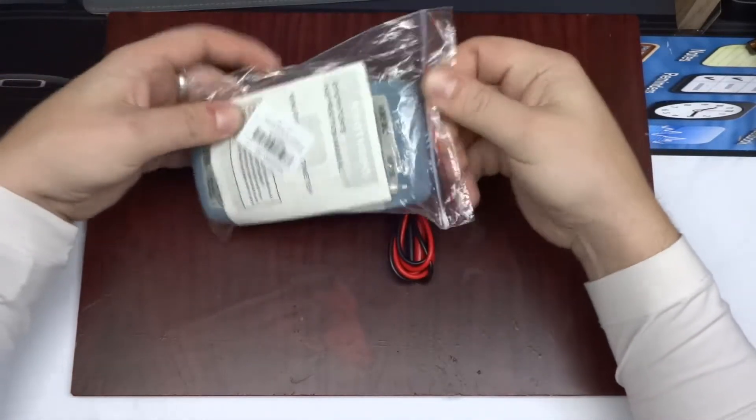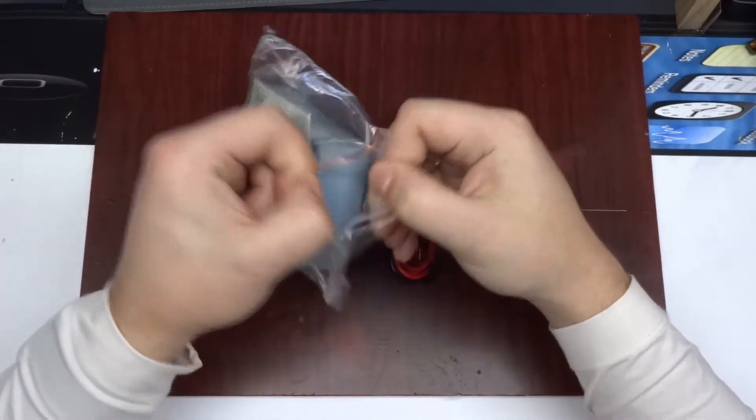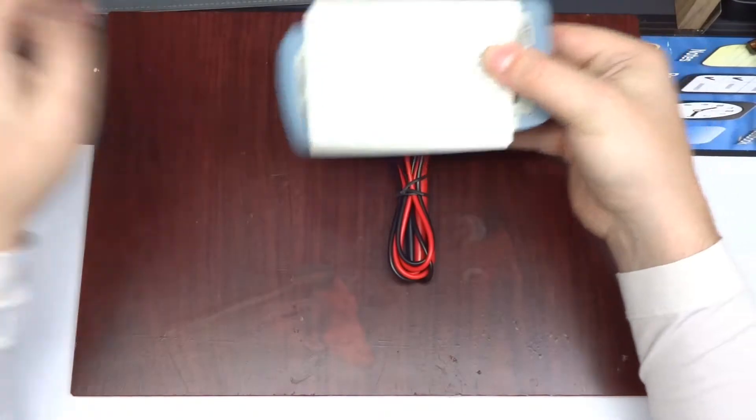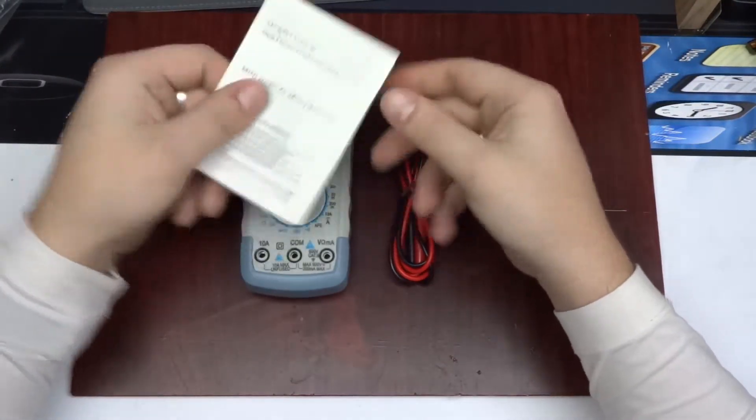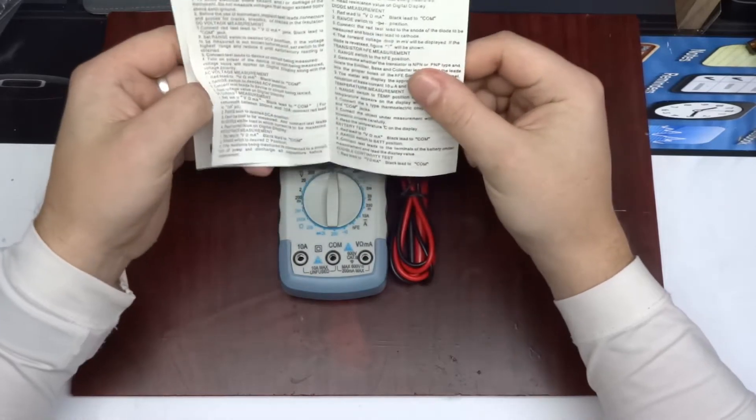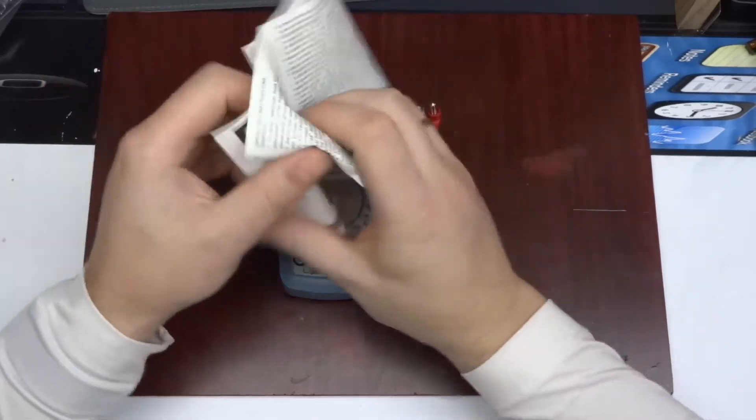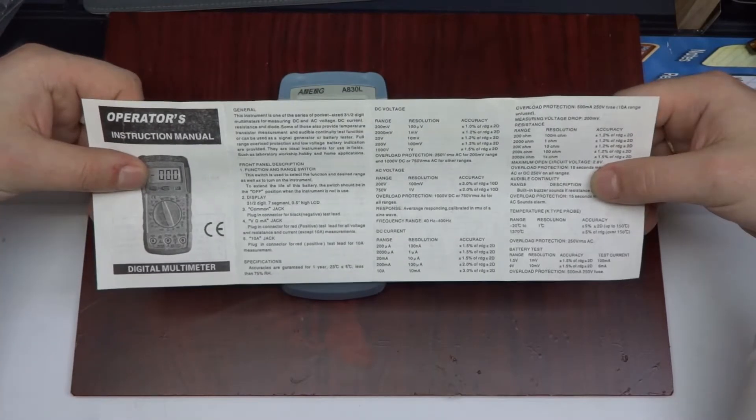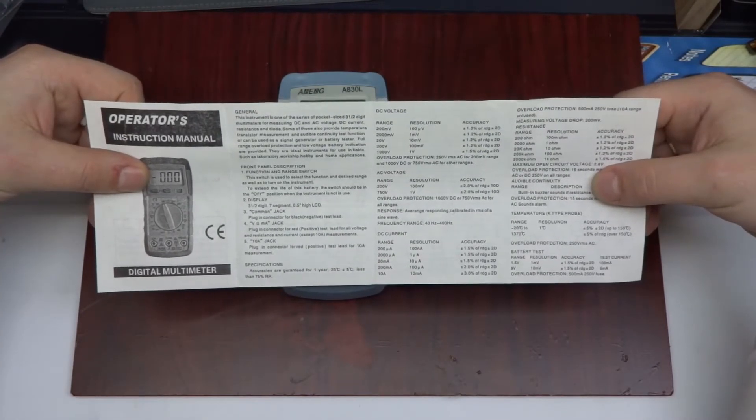We've got the device itself and an extensive manual. As you can see, the instrument is one of the series of pocket-sized three and a half digit multimeters for measuring DC and AC voltage.